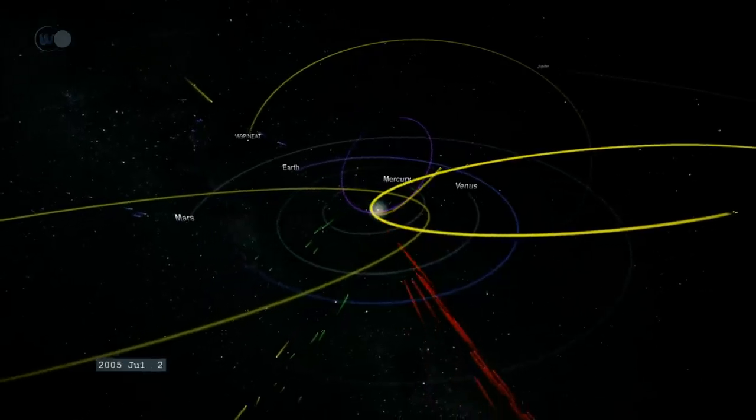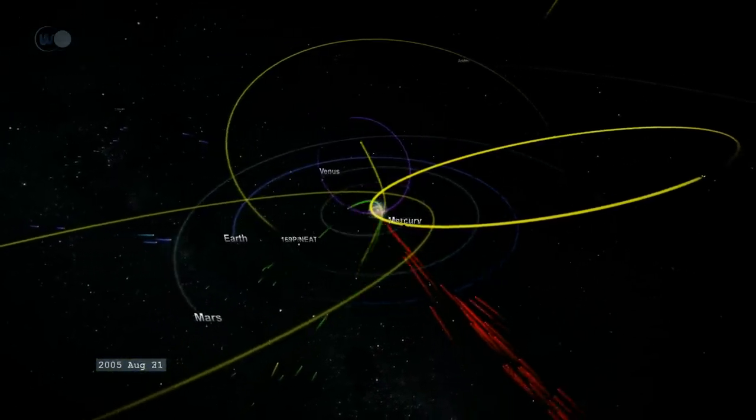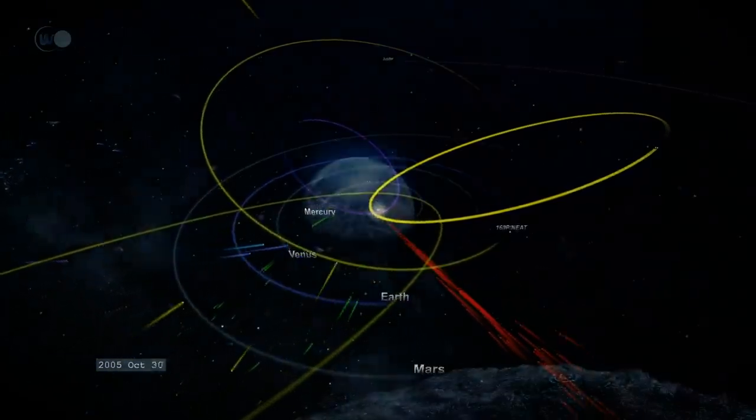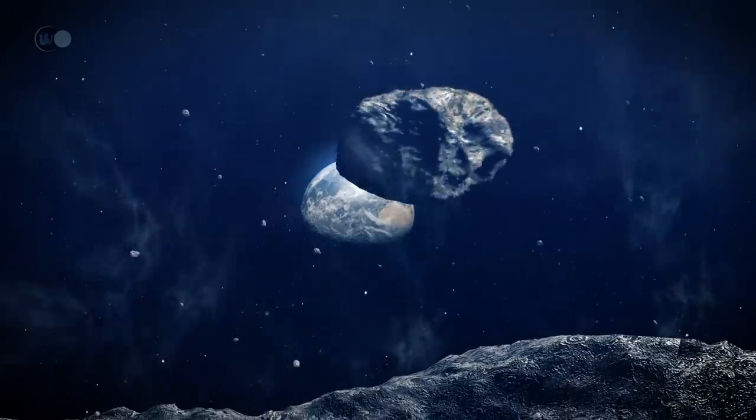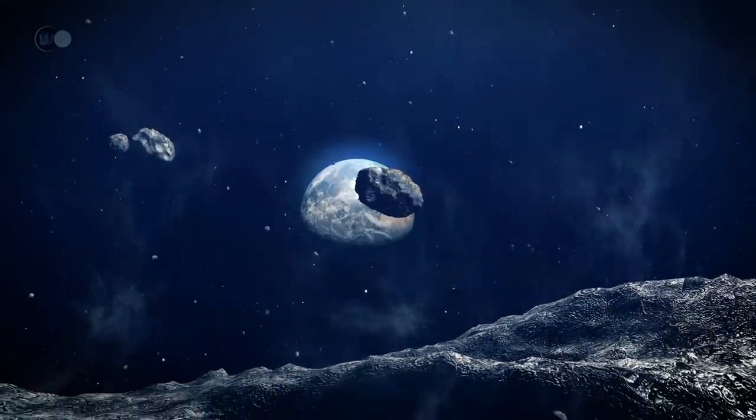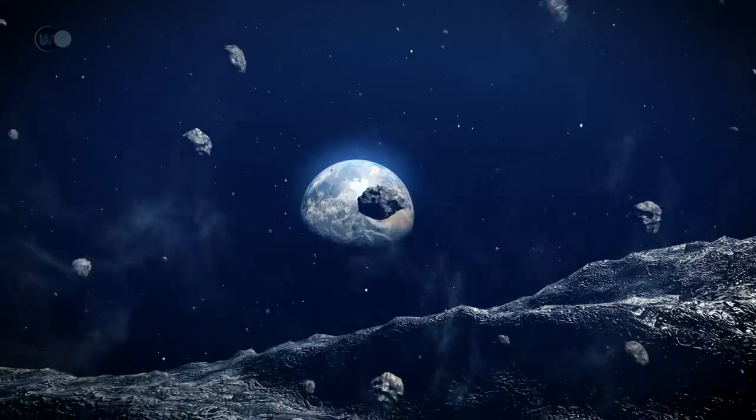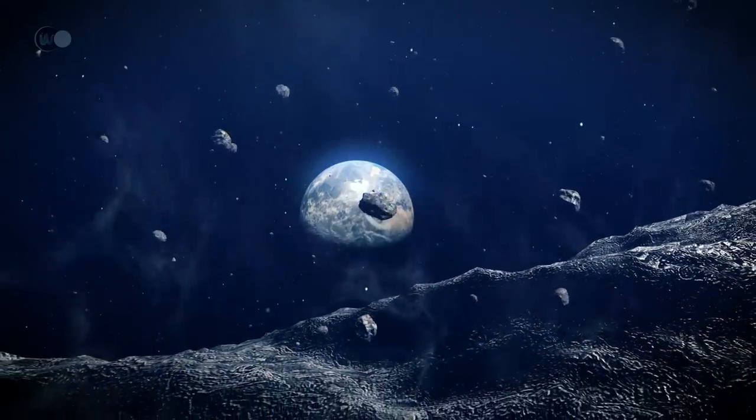Objects of this type regularly cross our trajectory, as our solar system is dotted with asteroids of varying dimensions, most of them fortunately minimal in size. Some, however, are considered potentially dangerous due to their size, at least 150 meters, and their orbit, which brings them to within 7.5 million kilometers of the Earth's orbit around the sun.